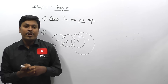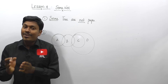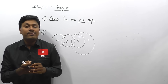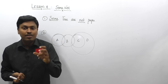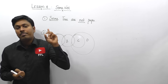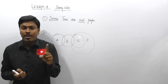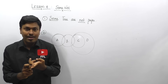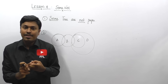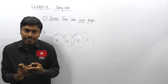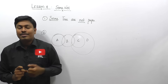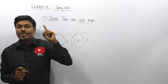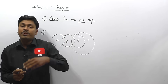In this lesson number four, we are going to solve five different questions, all based on the 'some not' conclusion. In lesson one we solved questions based on 'some', lesson two covered 'no conclusion', lesson three covered 'possibility conclusion', and now lesson four focuses on 'some not' conclusions.